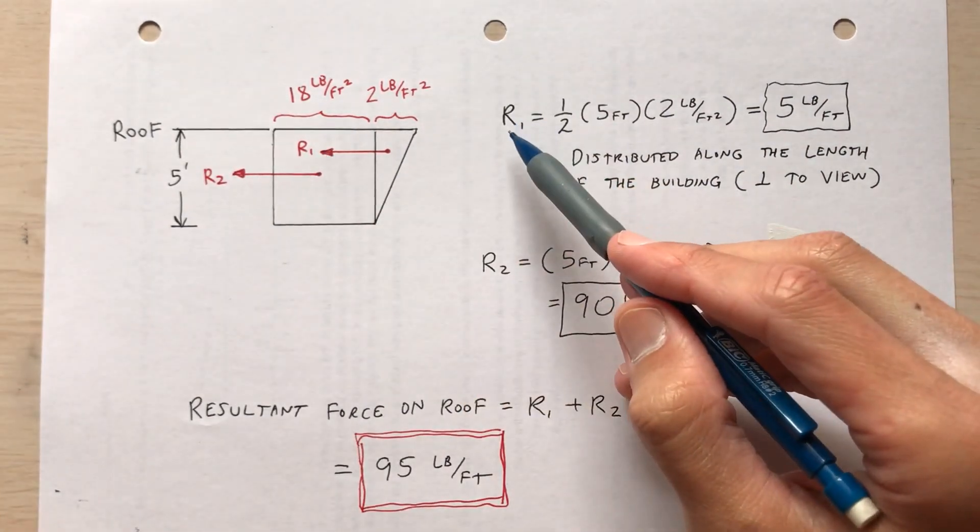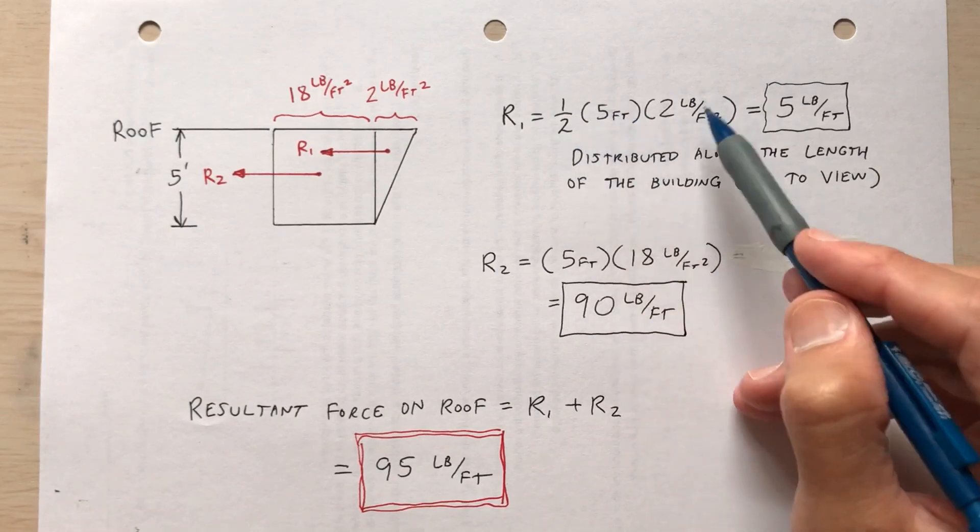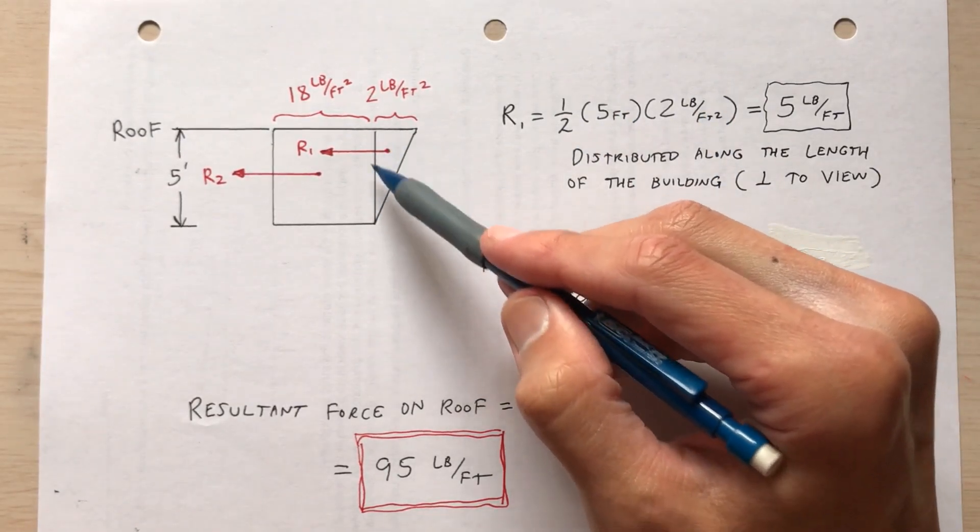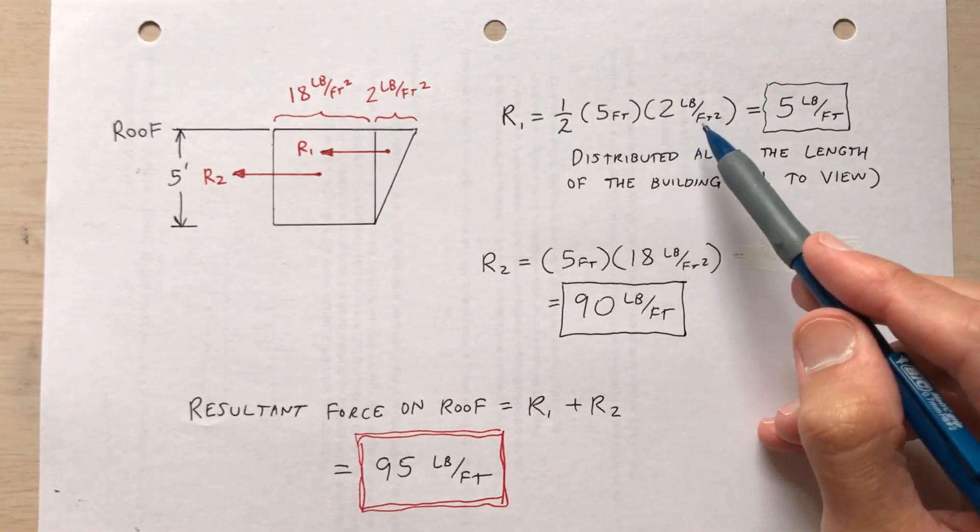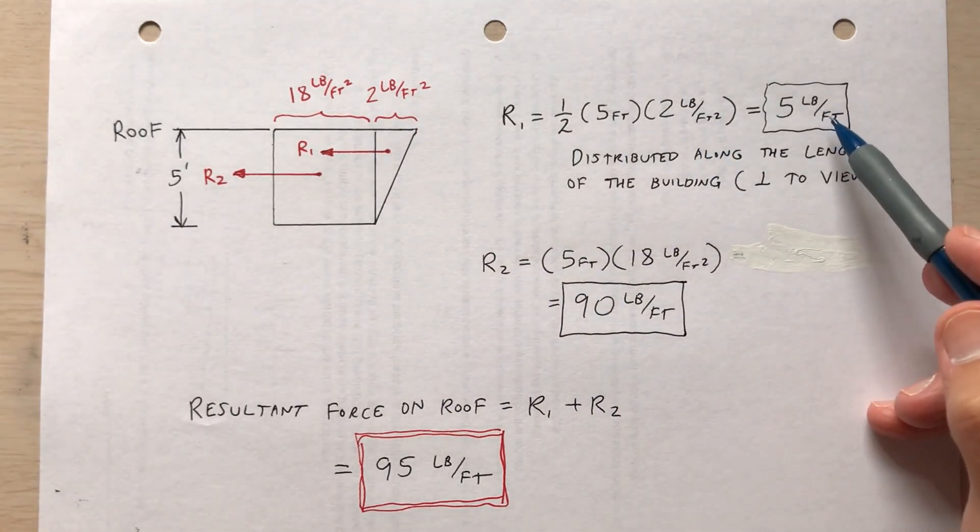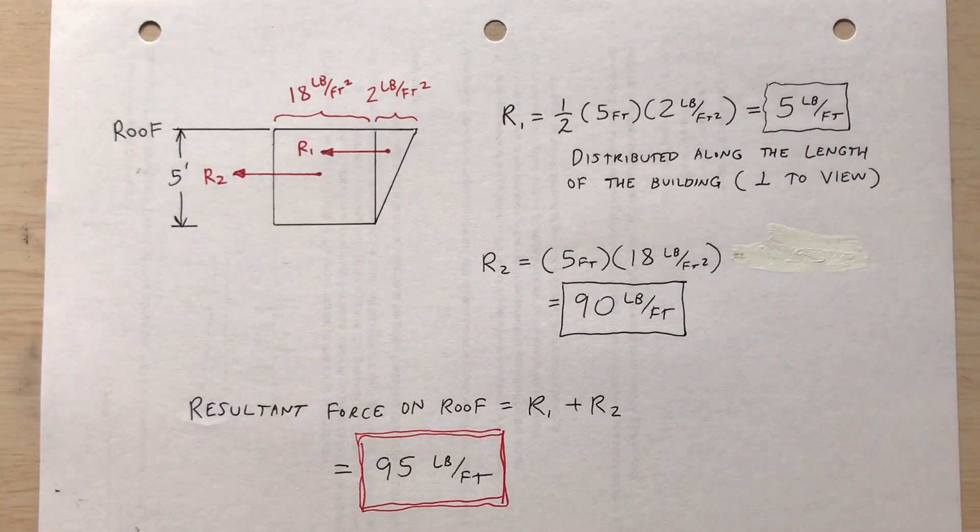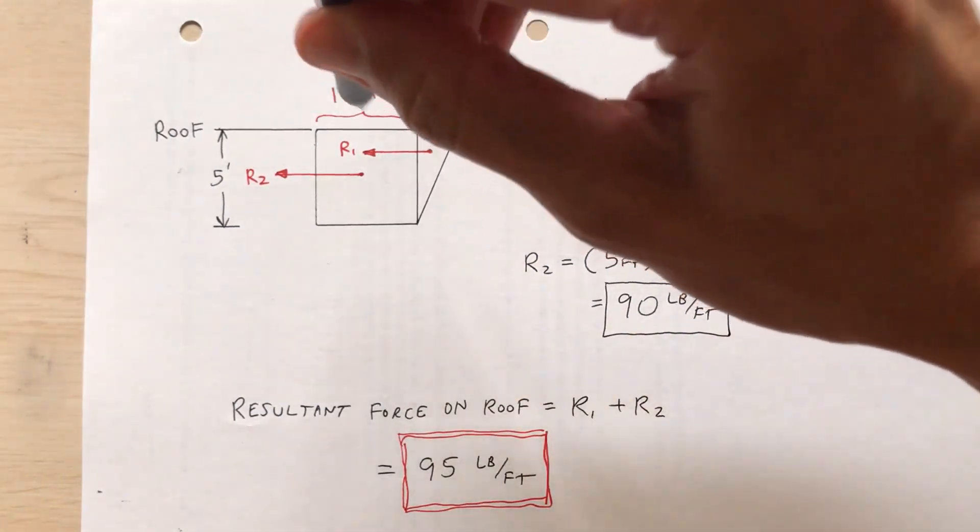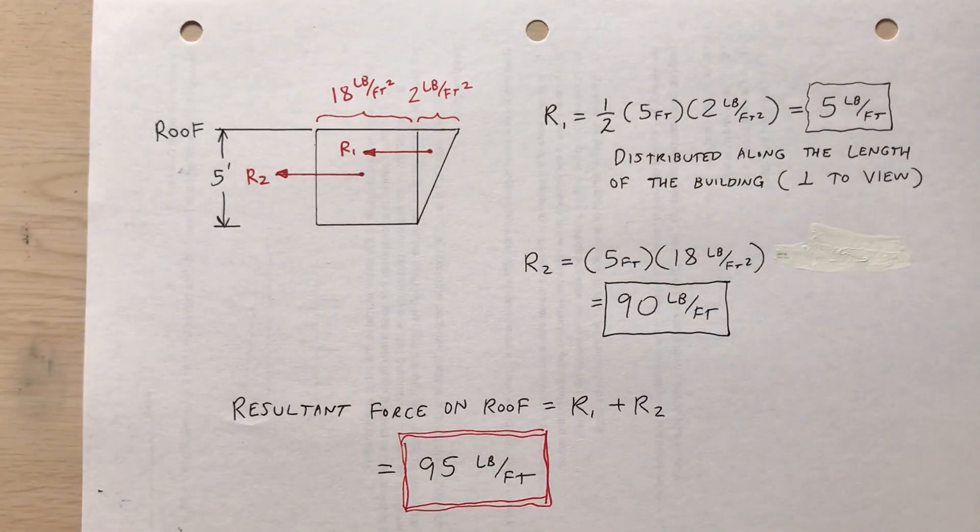So for the triangular portion, r sub one, the area of a triangle, one half base times height. So the base, five feet, the height, two pounds per square foot. So five pounds per foot. Now that's pounds per foot, because that's acting in and out of the paper. So I'd have to know the length of the building. If I knew the length, then I'd multiply the length by five pounds per foot to tell me the total resultant acting on this building.